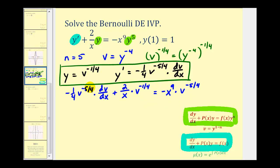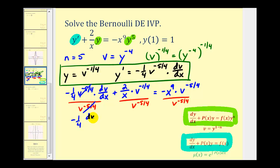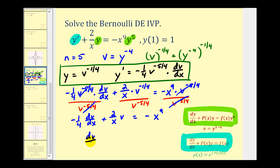We'll divide everything by v to the negative 5/4 to begin with. This will simplify to negative 1/4 dv/dx, plus 2 divided by x. Subtracting the exponents, negative 1/4 minus negative 5/4 gives plus 5/4, so this just becomes v. On the right side, this simplifies to negative x to the 9th. Now we multiply through by negative 4, giving us dv/dx minus 8 divided by x times v equals positive 4x to the 9th.